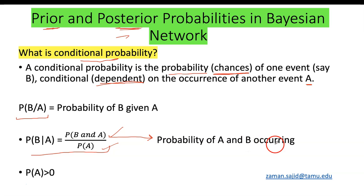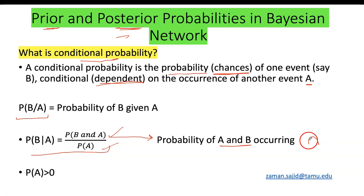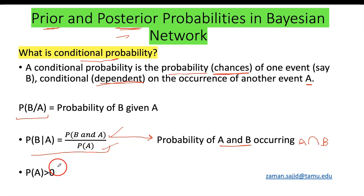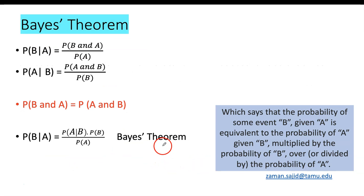This term here is the probability of A and B occurring — the order does not matter, you can also write it as the probability of B and A, because that is the intersection between A and B. Just keep in mind that the probability of A should always be greater than zero.